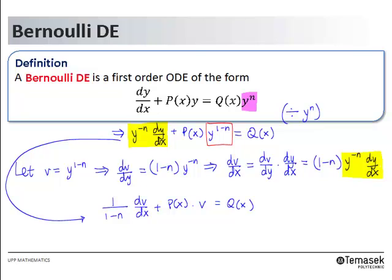Now we realize that this is a linear ODE. In standard form, it will be dv/dx plus 1 minus n times P(x) times v equals 1 minus n Q(x). This is a new linear ODE in terms of v and x.